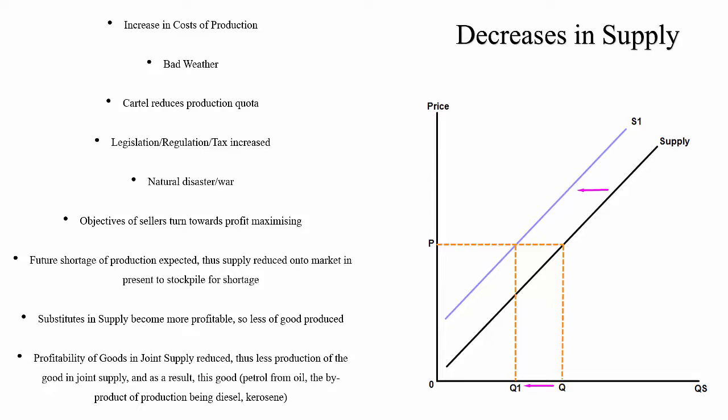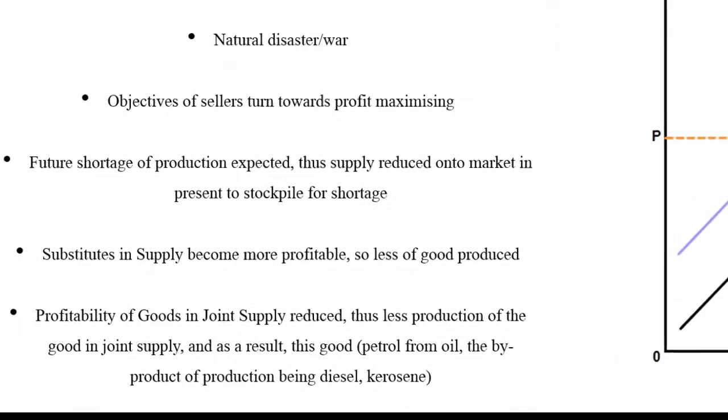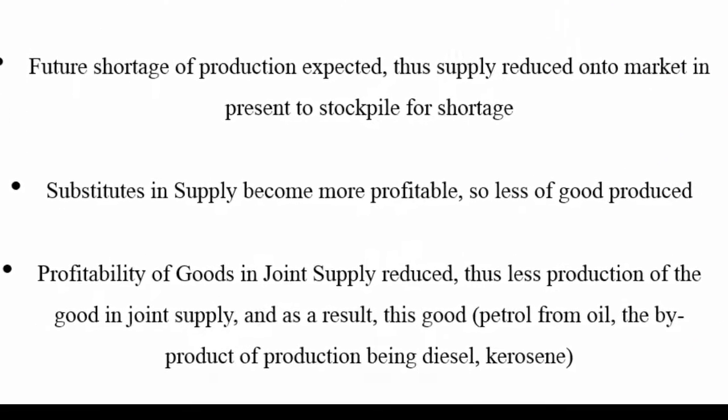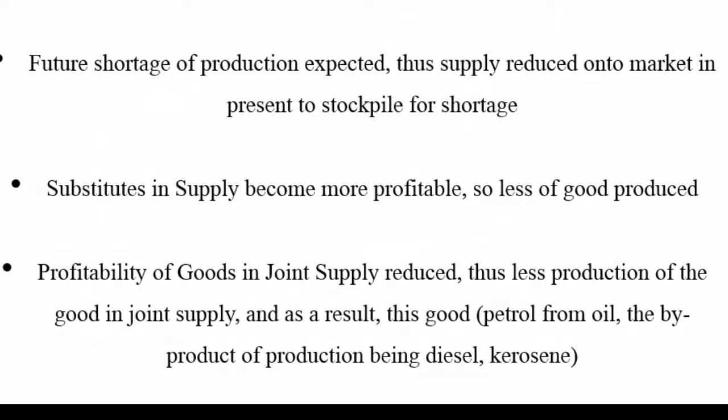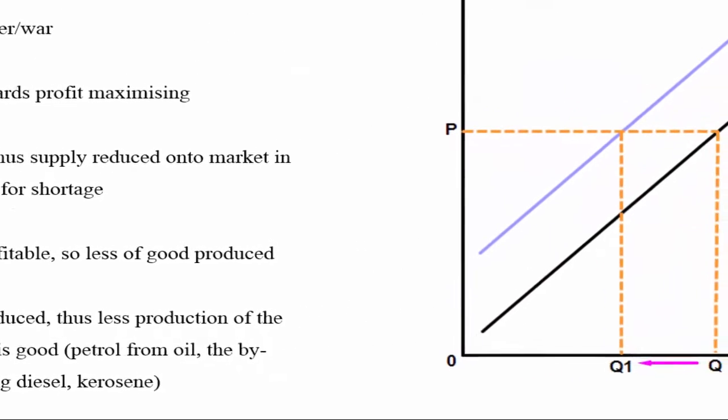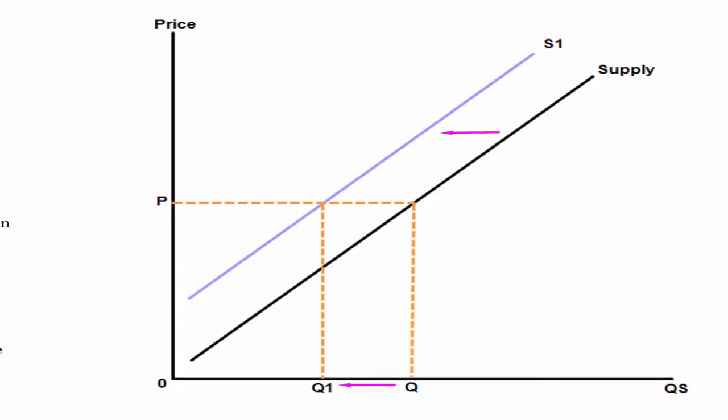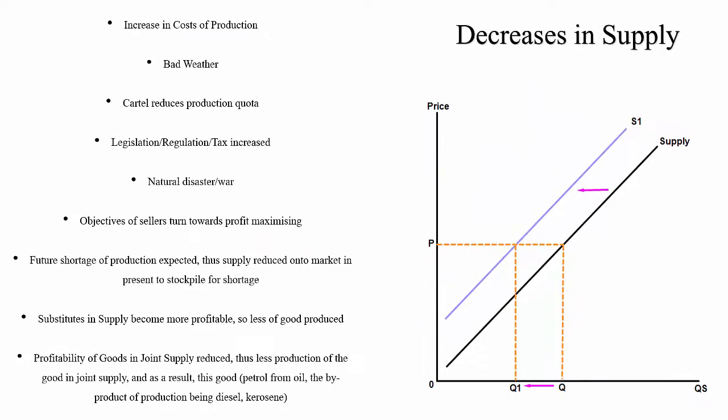The final example we'll use here is that if a substitute in supply, let's say a farmer grows carrots and a substitute for that is potatoes, if the substitute potatoes become more profitable to produce, then the farmer will switch production from carrots to potatoes and the supply of carrots will reduce and we'll see a shift leftwards in supply.